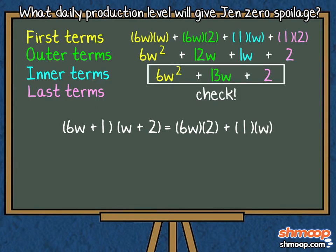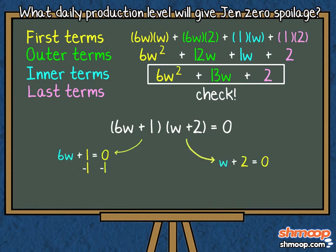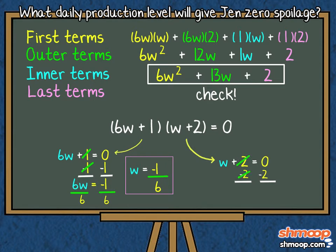Which means when spoilage equals zero, one of our factors must also equal zero. When we set each factor to zero and solve for W, we see that there is zero spoilage when our daily watermelon production equals negative one-sixth and negative two.